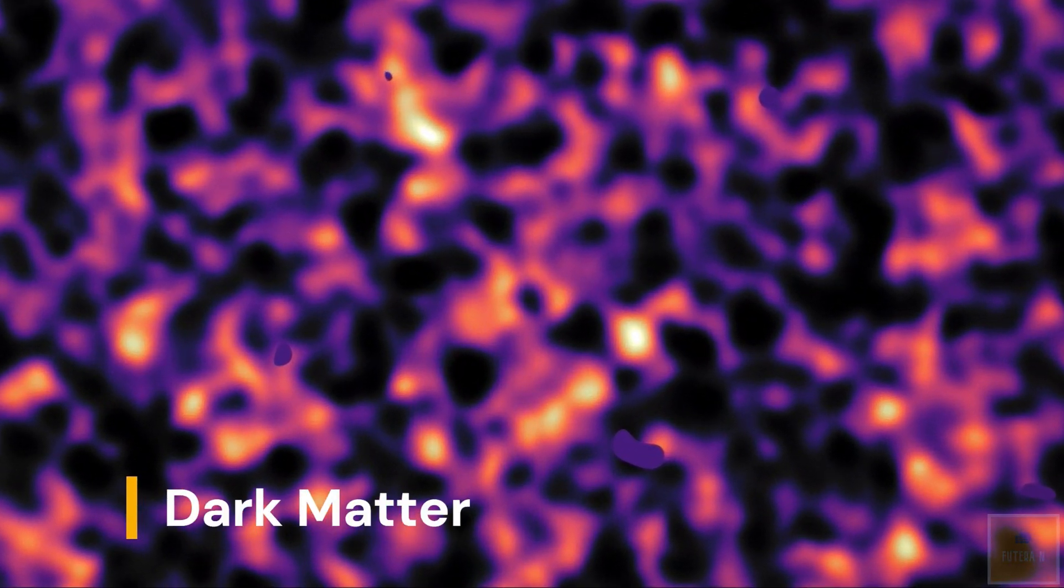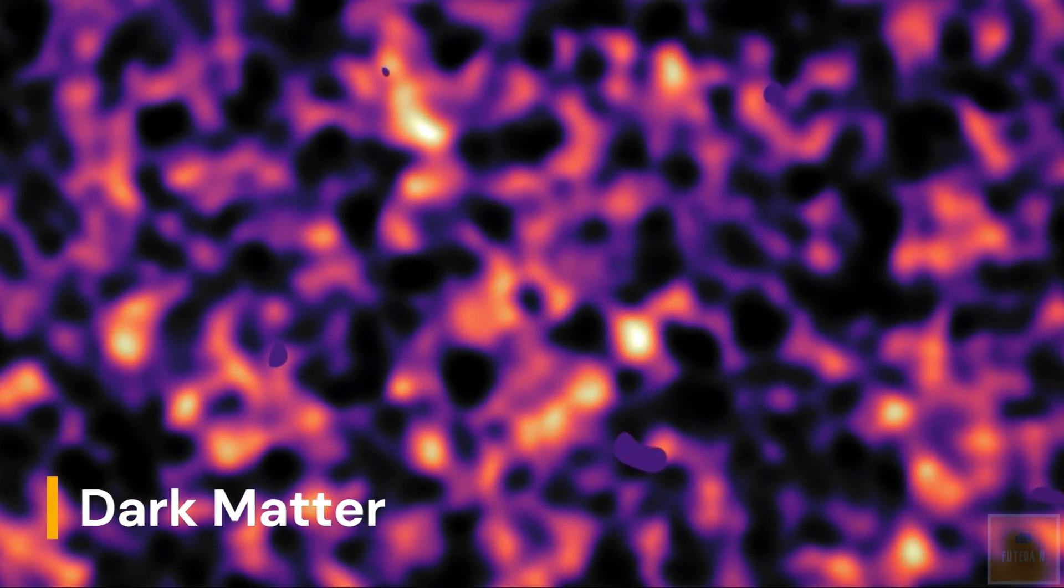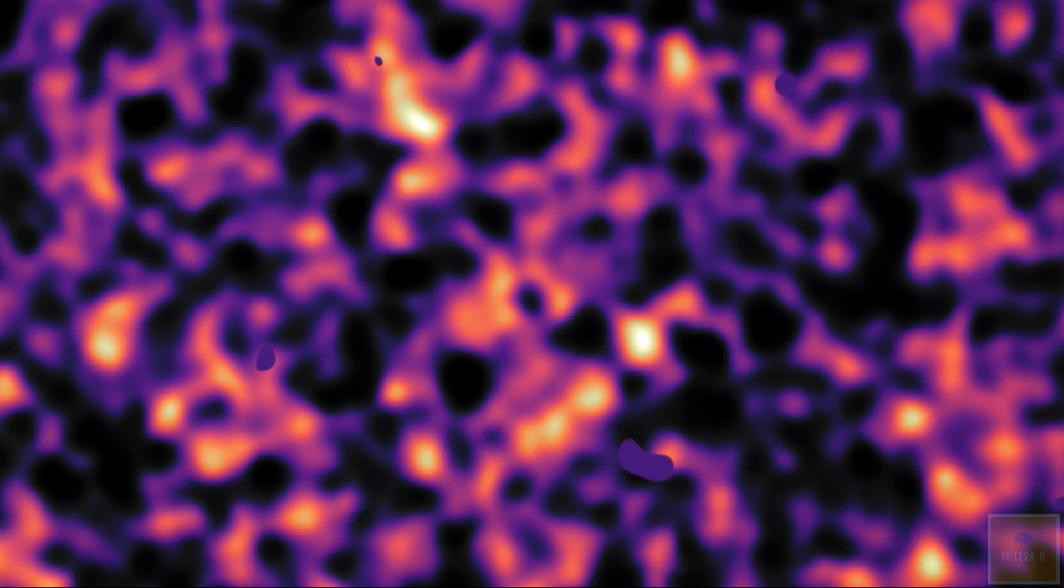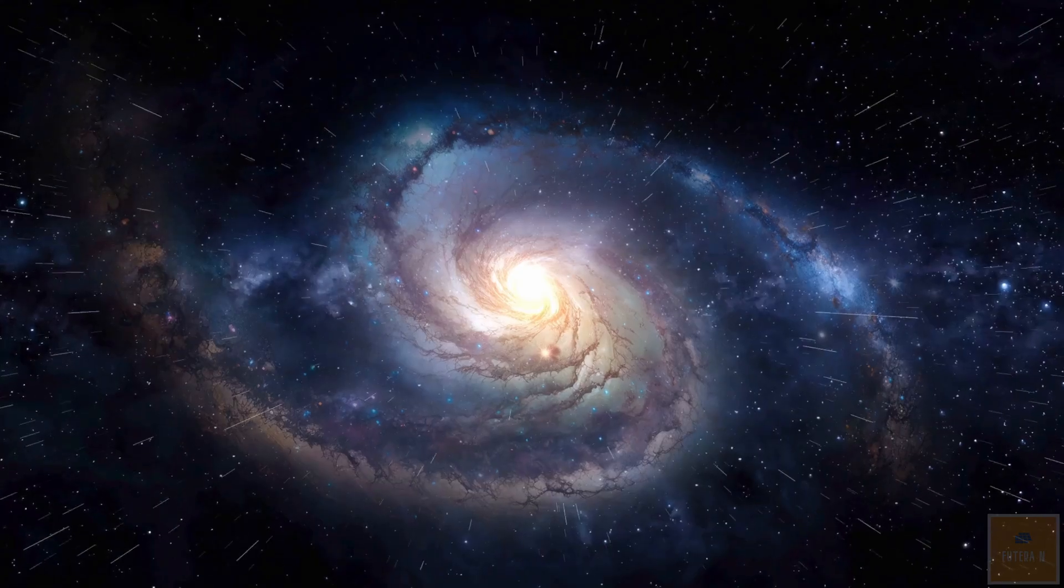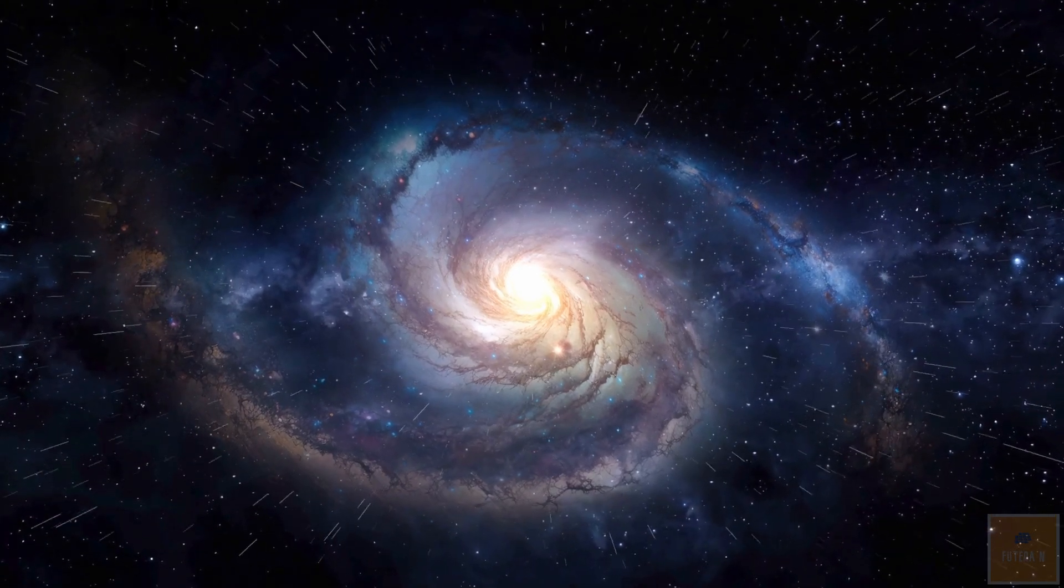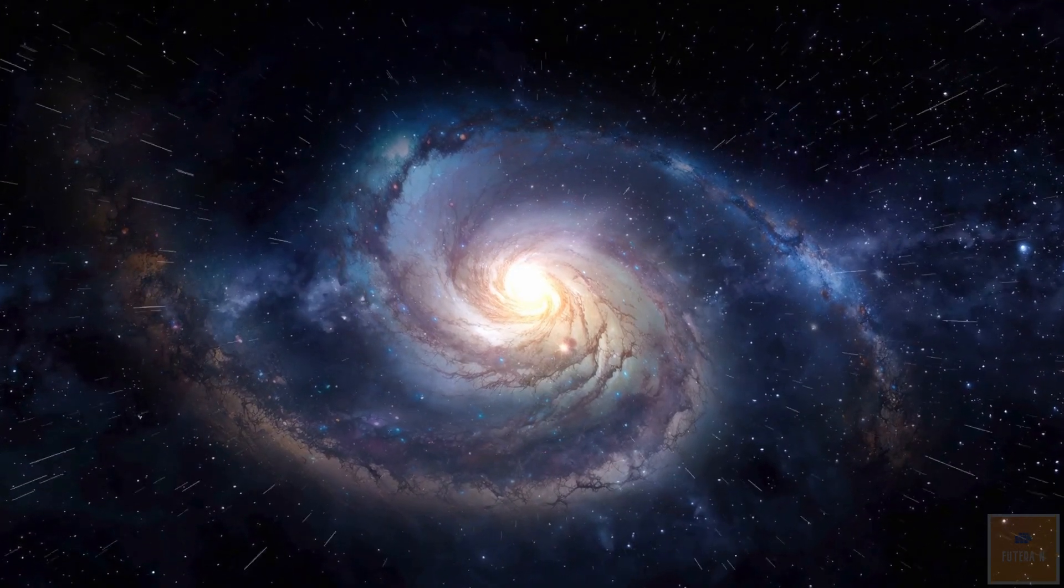Dark matter is a mysterious matter that constitutes about 30% of the matter energy in the observable universe. It cannot be observed directly because it does not emit, absorb, or reflect light. Dark matter interacts with regular matter only through gravity, which allows it to affect galaxies' rotational speed.